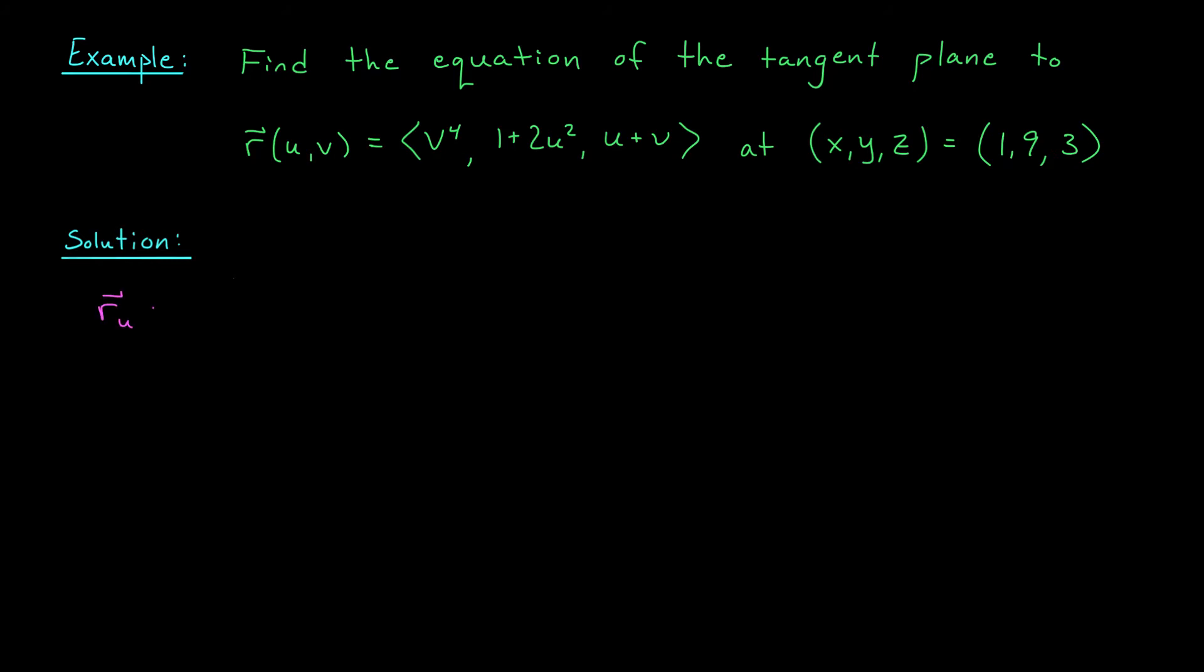That gives us r u equals zero, four u, and one. If we differentiate with respect to v, we get r v equals four v cubed, zero, one. We need to evaluate these derivatives at some point u naught v naught.